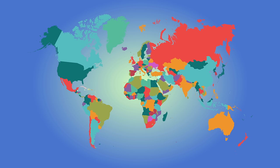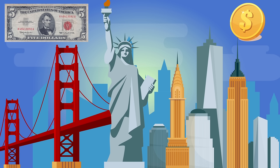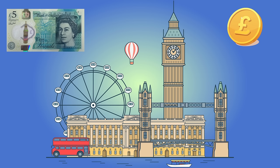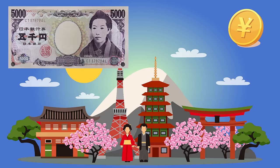Most countries have their own type of money. For example, in the United States they have the dollar, in Great Britain they have the pound and in Japan they have the yen.